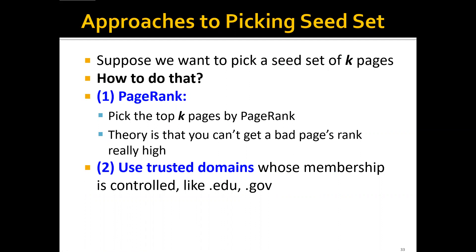It's impossible to manually label all web pages on the web, so how can we do this in a cost-efficient way? One approach is to use PageRank and pick the top K pages by PageRank score. The second approach, as mentioned, is to use trusted domains whose membership is actually controlled, like .edu or .gov domains.